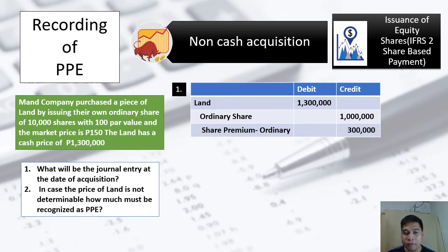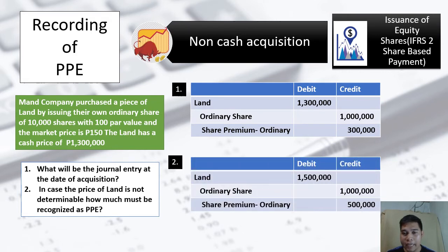The remaining amount goes to Share Premium - Ordinary, amounting to 300,000 pesos. If the fair market value of the land is not available, we simply use the fair market value of the shares issued. Since 150 is our fair market value, that would be the value of the land: debit Land 1.5 million (150 times 10,000), credit Ordinary Share 1 million, and the remaining 500,000 goes to Share Premium - Ordinary.